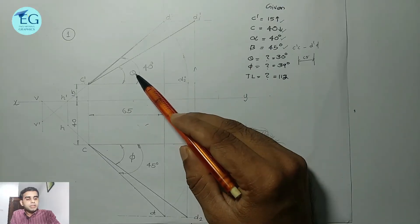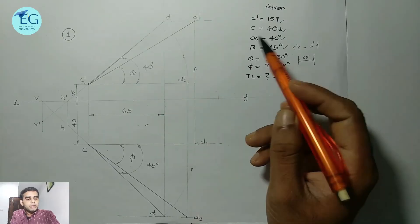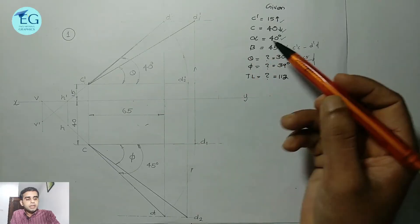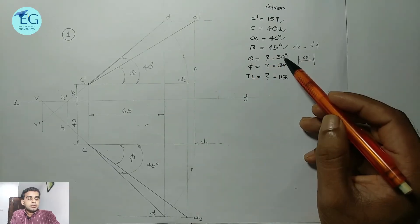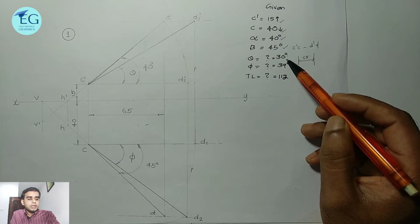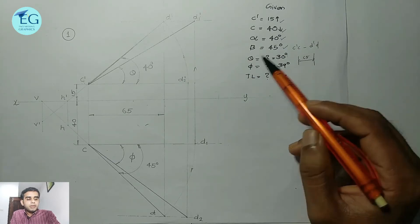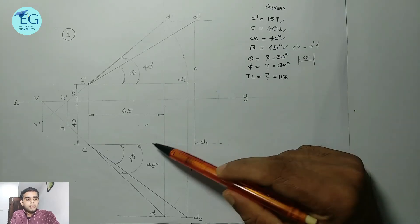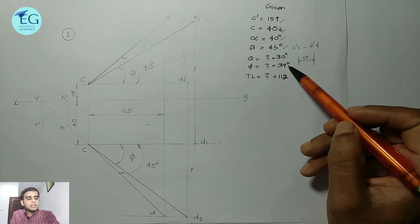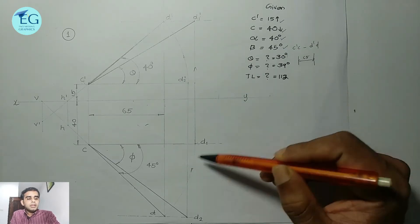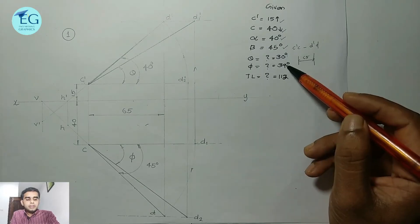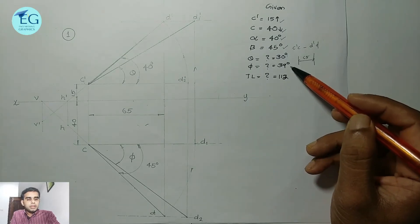The inclination with HP, theta, is approximately 30 degrees, and the answer works out to 39 degrees for the inclination.